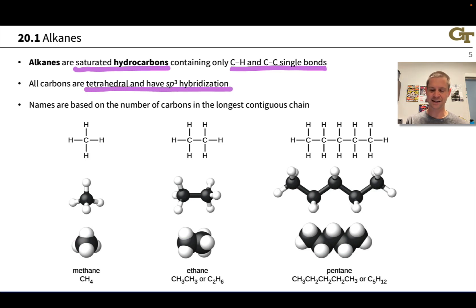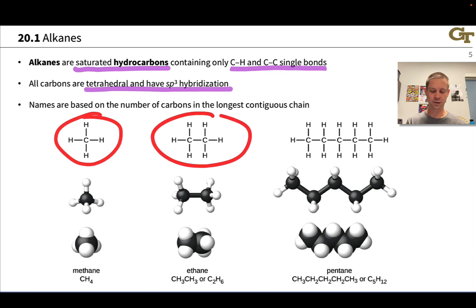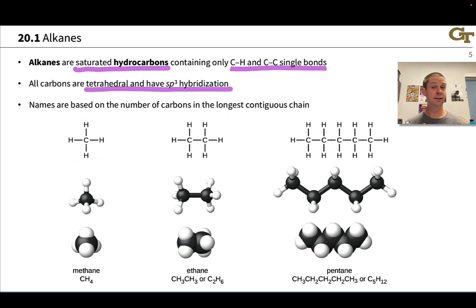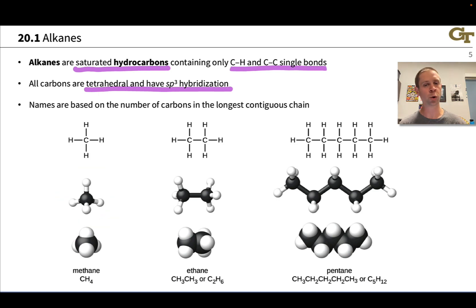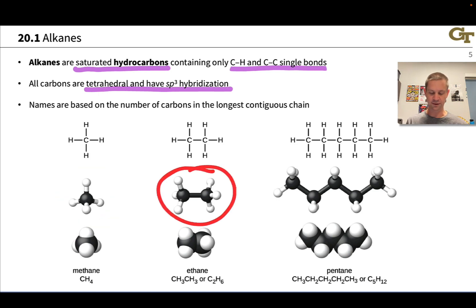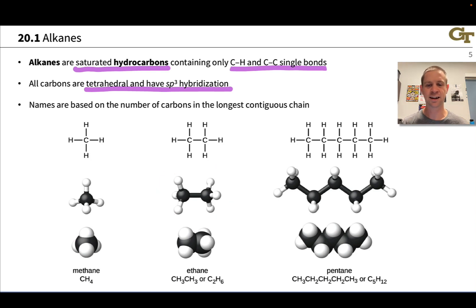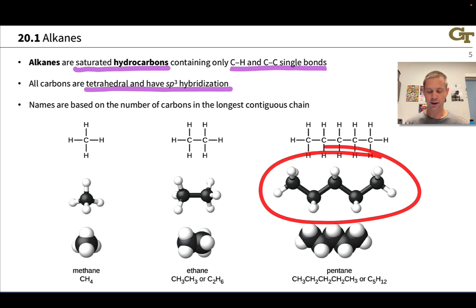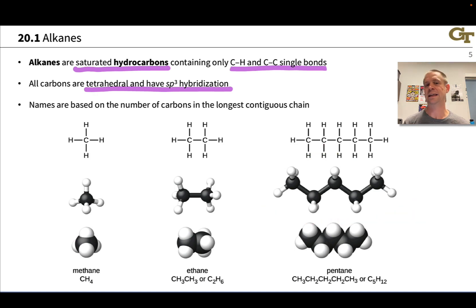While you're not seeing that in these simplified Lewis structures, we do see in the three-dimensional structures the typical tetrahedral geometry of carbon. For example, CH4 is methane, C2H6 or CH3CH3 is ethane, and C5H12 is pentane. Each carbon has the tetrahedral geometry.